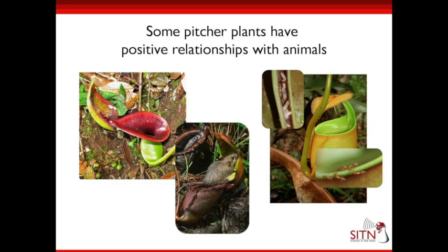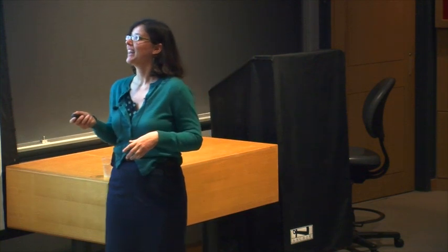Symbioses can fluctuate — in different conditions they might be positive or negative, depending on resources and environment. Some pitcher plants have very positive relationships with certain animals. One species acts as a toilet: tree shrews are attracted to nutritious secretions the plant produces, and that positions them perfectly so they defecate into the pitcher. There's a lot of nitrogen in these droppings, which helps the pitcher plants grow in super low-nutrient areas. A similar association exists with a species of rat in Southeast Asia, positioned perfectly for its droppings to fall into the pitcher.